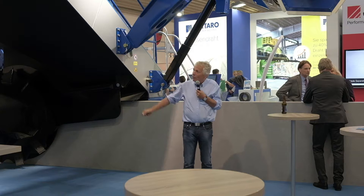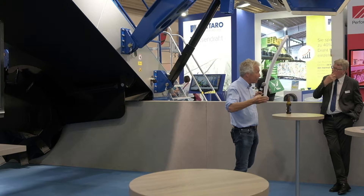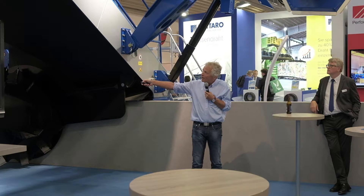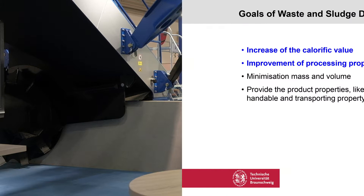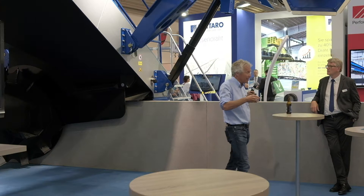There are several technologies — some physical ones and some biological ones. One biological approach is aerobic drying, and another is solar drying. Solar drying is the most efficient, but it can only be used for sludge, and it is still operating in Germany and other countries. We focused on aerobic drying because the energy demand of this biological process is much lower compared to physical systems like belt dryers or drum dryers.